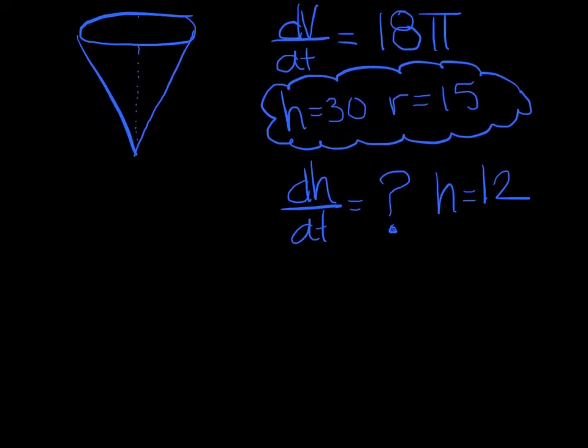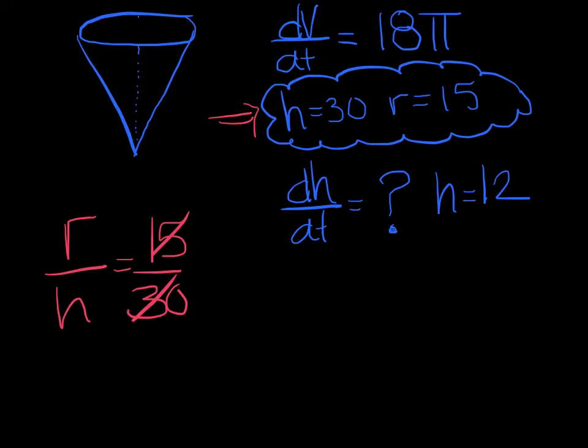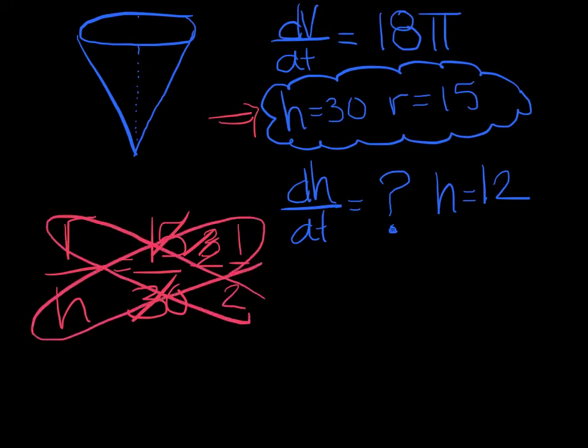So my goal is to write my ratio. Radius over height equals, and I kind of bubbled it in, radius is 15 when the height is 30. And I want to reduce that if possible. They're both divisible by 15, 1 half. And then I'm going to cross multiply, and I'm going to solve for both h and for r. So I'm going to say 2r equals h, or if I wanted to solve for r, r equals h over 2. I don't know which one I'm going to use at the moment, but we'll put both of those down.